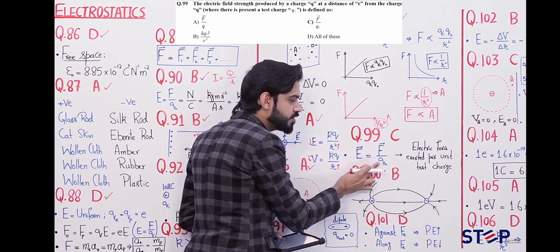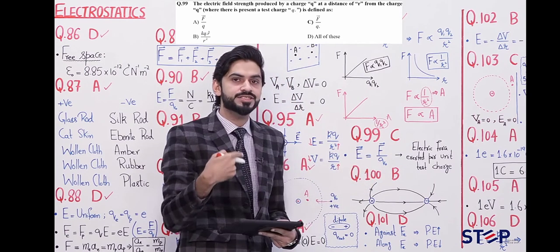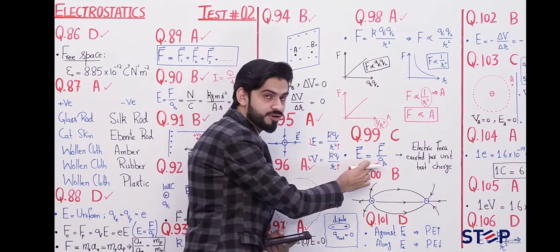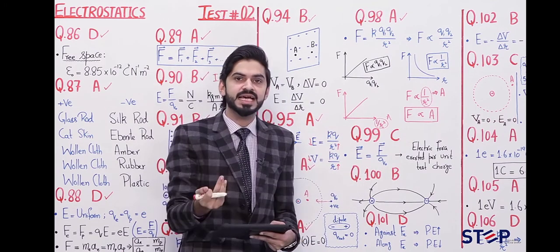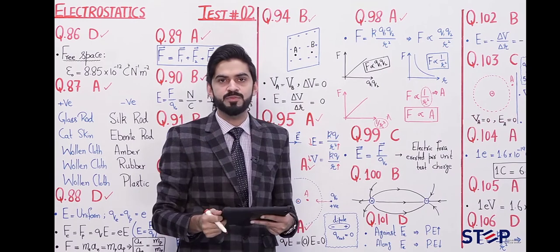Here is an important point: In the denominator, which charge comes? The charge that defines the electric field doesn't come in the denominator, but the charge that is taken to a particular point—the test charge—always appears in the denominator.